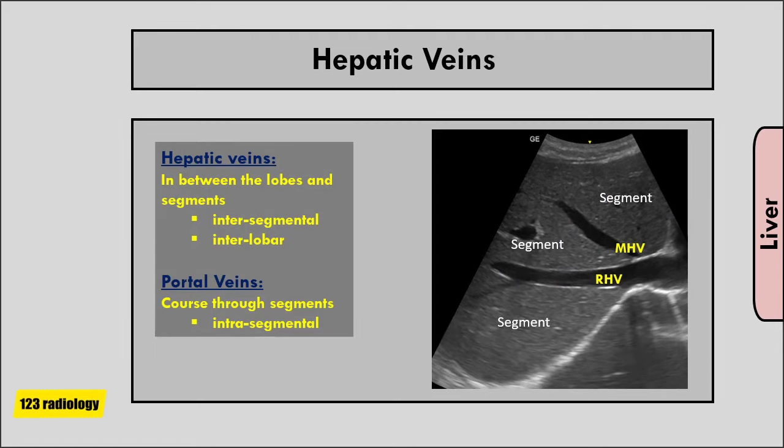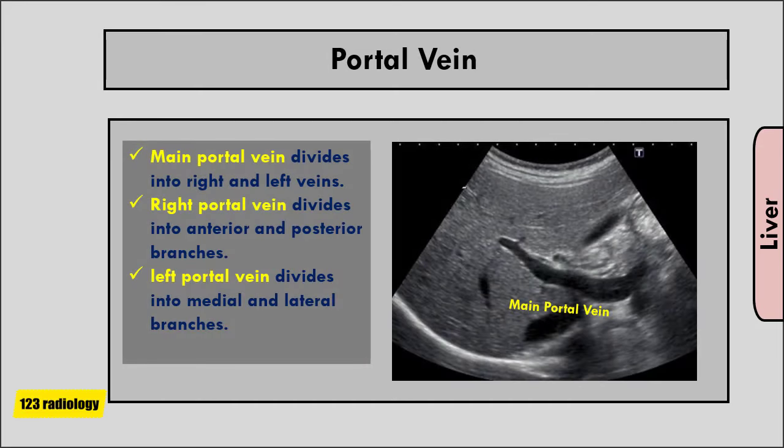Portal veins course through segments — they are intrasegmental. The portal vein is formed by the union of all veins draining the intestine, spleen, pancreas, and gallbladder. It runs obliquely upward to the right and reaches the hilum of the liver, accompanied by the hepatic artery and the common bile duct. Immediately after reaching the liver, the portal vein divides in the porta hepatis into right and left portal veins.